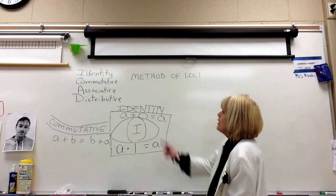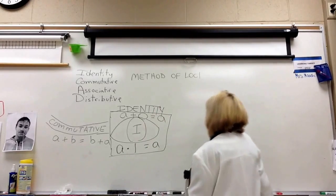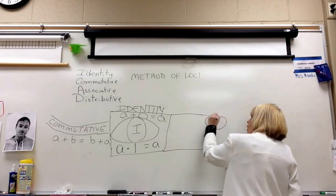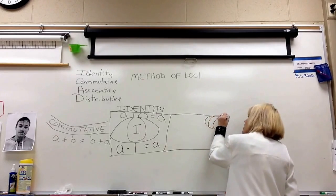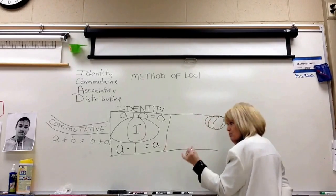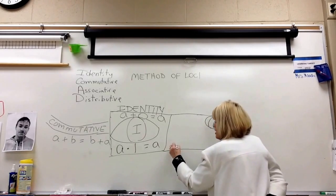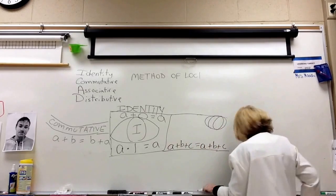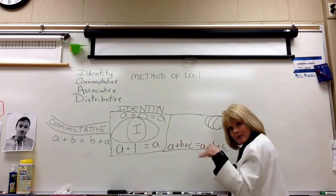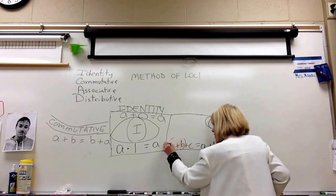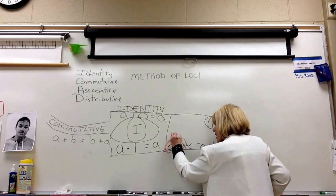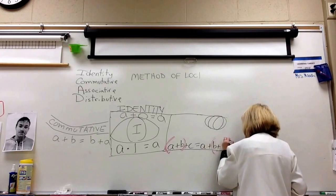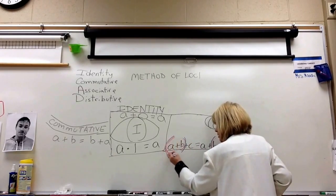Now we're going to move to the associative property, and we're going to put that in the playroom — playroom for the kids. We're going to indicate that it's a playroom by drawing a beach ball in there. The associative property is A plus B plus C equals A plus B plus C, but with grouping symbols. I'm going to use color because the beach ball has a lot of color.